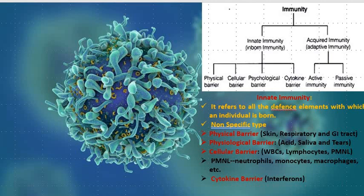Immunity can be categorized into two kinds: innate immunity and acquired immunity. For innate immunity, it refers to all the different elements with which an individual is born, always available to protect the body. It is a non-specific type — no specificity toward any pathogen or external invader. It is a non-specific defense system inherited from parents, consisting of four different types of barriers. The physical barrier is the first line of defense: the skin and mucus coating on the epithelium lining the respiratory, gastrointestinal, and urogenital tracts help trap microbes.